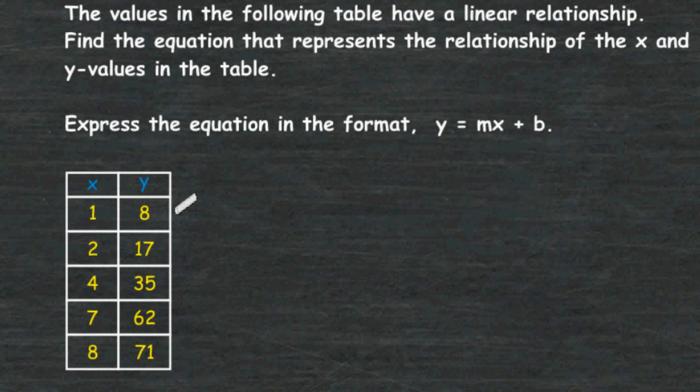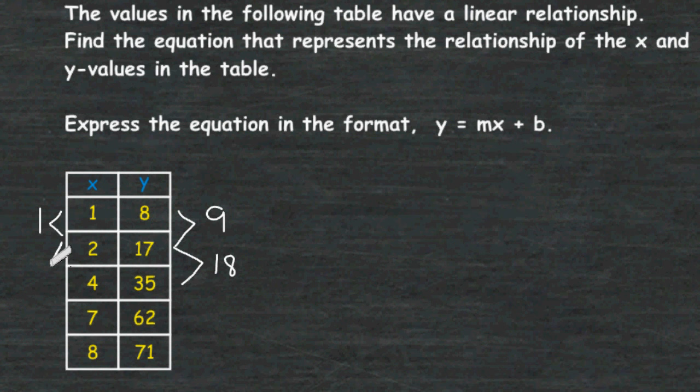Let's take a look at the first y value, which is 8. It goes from 8 to 17, which is an increase of 9. The corresponding change in the x values is a change of 1. The next change in y goes from 17 to 35, which is an increase of 18, and the corresponding increase in x values is 2.